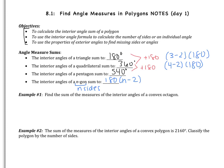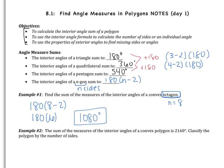Example 1: find the sum of the measures of the interior angles of a convex octagon. An octagon has eight sides, so I'm going to do 180 multiplied by 8 minus 2. 8 minus 2 is 6, so I'm really doing 180 multiplied by 6, which is 1,080 degrees. All of the interior angles of a convex octagon add to be 1,080 degrees.